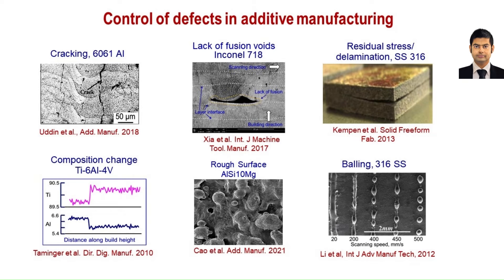Defects are a very important feature of microstructure. There are a variety of common defects in additive manufacturing shown in this display, and they all affect the properties and serviceability of components. The control strategies vary depending on the type of defects, the alloy, and the specific additive manufacturing process. For example, cracking may be prevented in some cases by changing the grain morphology from columnar to equiaxed grains. The paper explains several ways to do that and discusses how other defects shown here can be controlled.